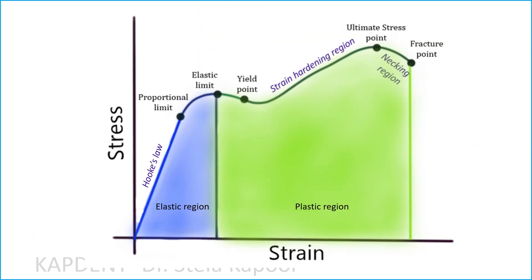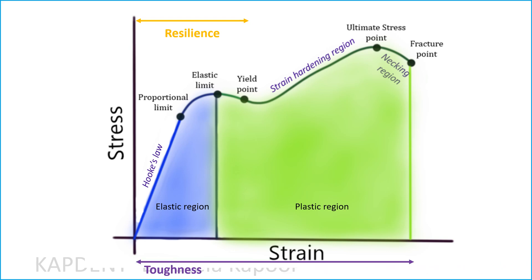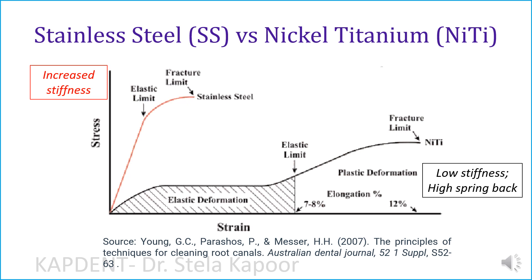The area under the graph up to the yield point gives us a measure of resilience, while the entire area under the graph gives us the toughness of the material. So this is the completed graph. A comparison between stainless steel and nickel titanium would look something like this, because of the increased stiffness of stainless steel compared to the low stiffness and high spring back of nickel titanium.